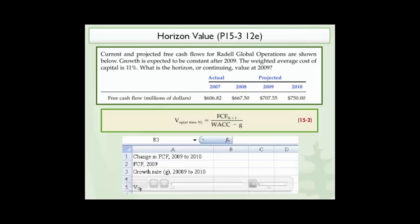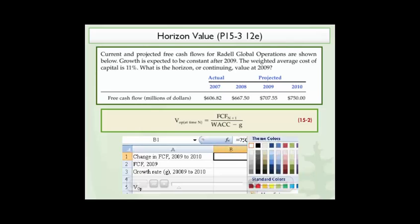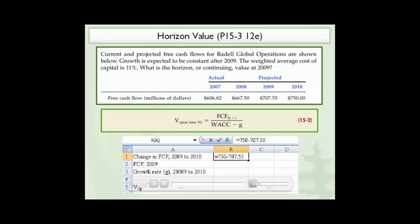Let's take a look and see how we determine the horizon or continuing value at 2009. We start off with the change in free cash flow from 2009 to 2010. Let me bring that to light and you'll see, when I hit the F2 key, it's the $750 of free cash flow projected in 2010, less the $707.55 of free cash flow projected in 2009.